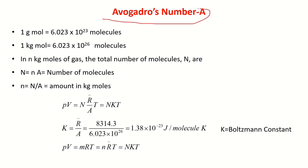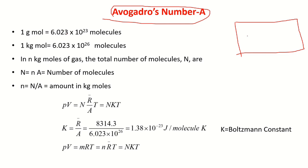There is also Avogadro's number. If you take 1 gram mole of a substance — for example, 1 gram mole of oxygen means 32 grams of oxygen — you can find 6.023 × 10²³ molecules. If you count the number of oxygen molecules, it will be 6.023 × 10²³. If you take 1 kg mole instead of 1 gram mole, you multiply by 1000 to get 6.023 × 10²⁶.